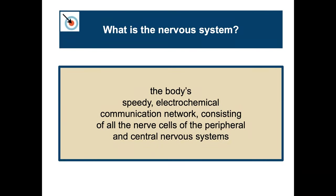What is the nervous system? The nervous system is the body's speedy electrochemical communication network. It consists of all the nerves of the peripheral and central nervous systems. Neurons communicating with neurotransmitters make up this communication network, which takes in information from the world and from the body's tissues, makes decisions, and sends orders out to the body's tissues.